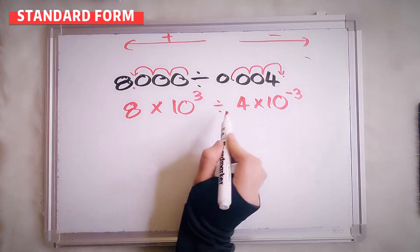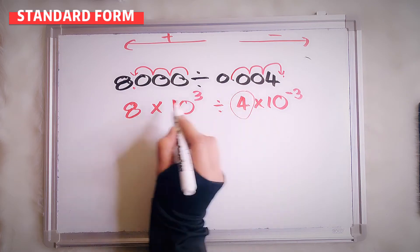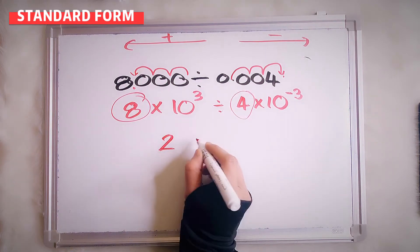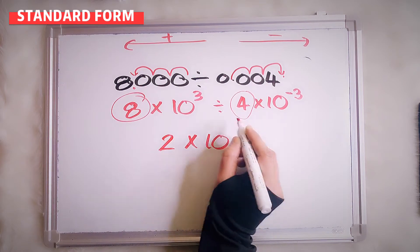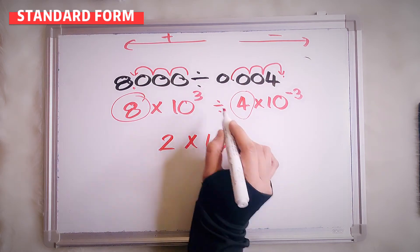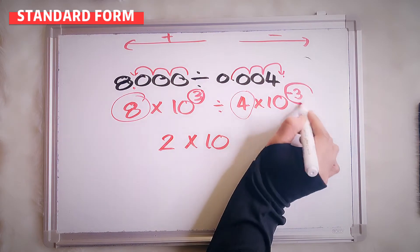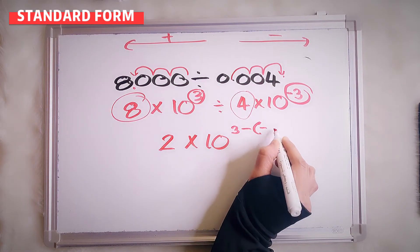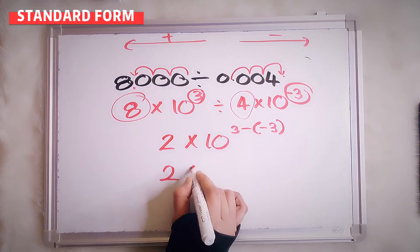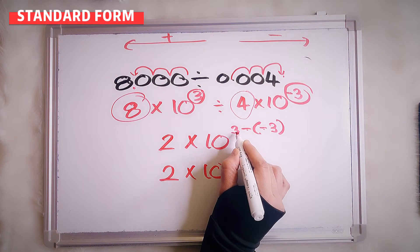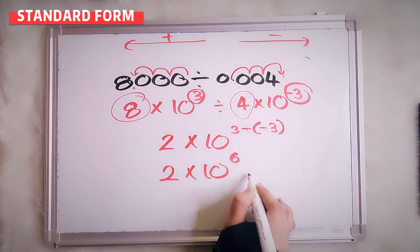So 8 divided by 4 — focus this first. 8 divided by 4 equals 2. Multiply by 10. This is divide, so these two powers you have to minus: 3 minus negative 3. Negative negative is positive, so 3 plus 3 will be 6. Answer: 2 times 10 to the power of 6.